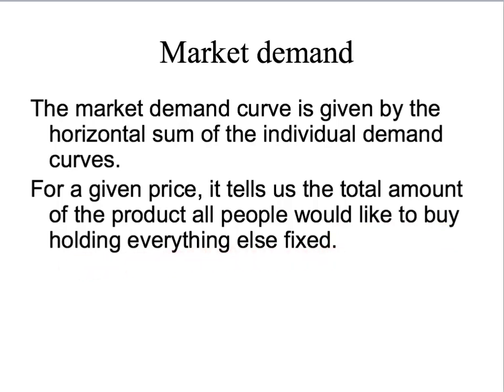A couple of points to highlight. First, our market demand curve has our price-taking assumption built in — it assumes that all buyers in the market take the price as given and ask: given the price, how much would all of those people in total like to buy? Just as with an individual demand curve, if the price of our product such as apples changes, we will shift along the demand curve. If anything else changes — for example, the income level of people, the price of some other goods such as bananas, pears, or ice cream, or people's expectations (if I read in the newspaper that apples cure cancer) — changing any of those other things will shift the market demand curve.